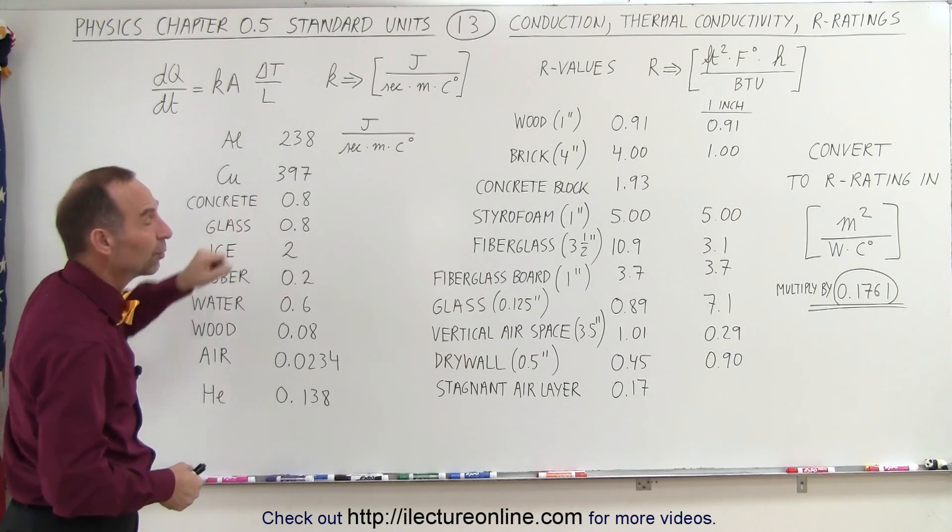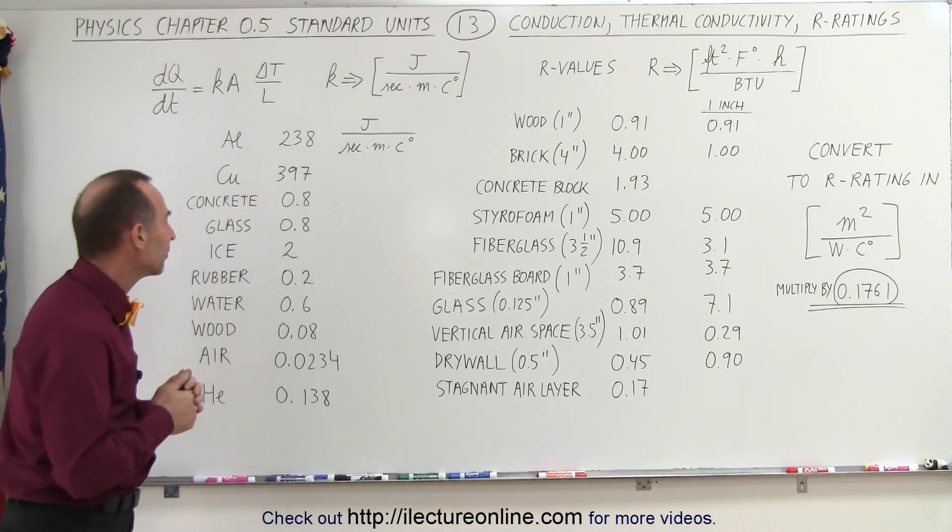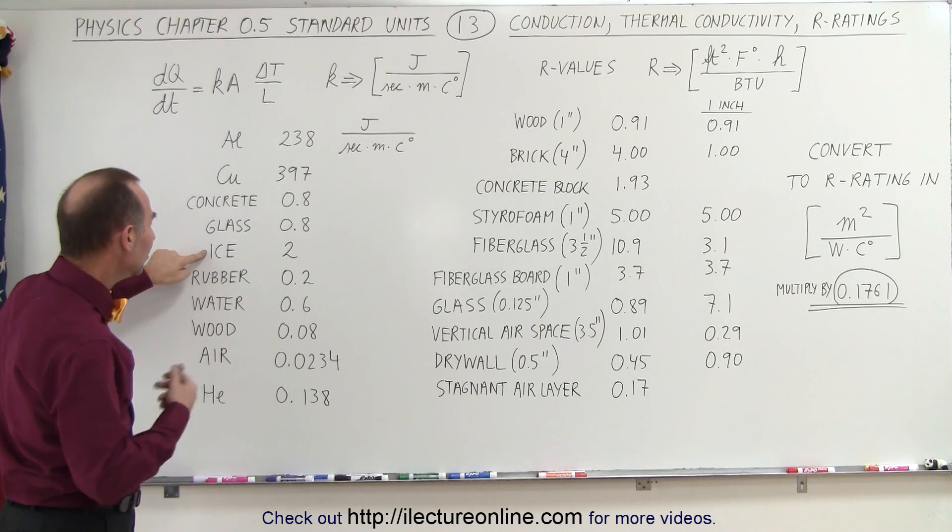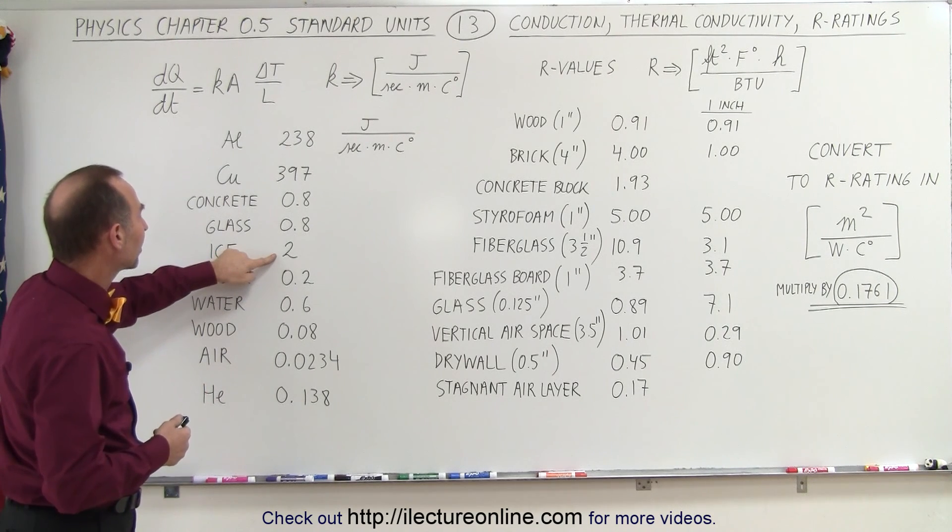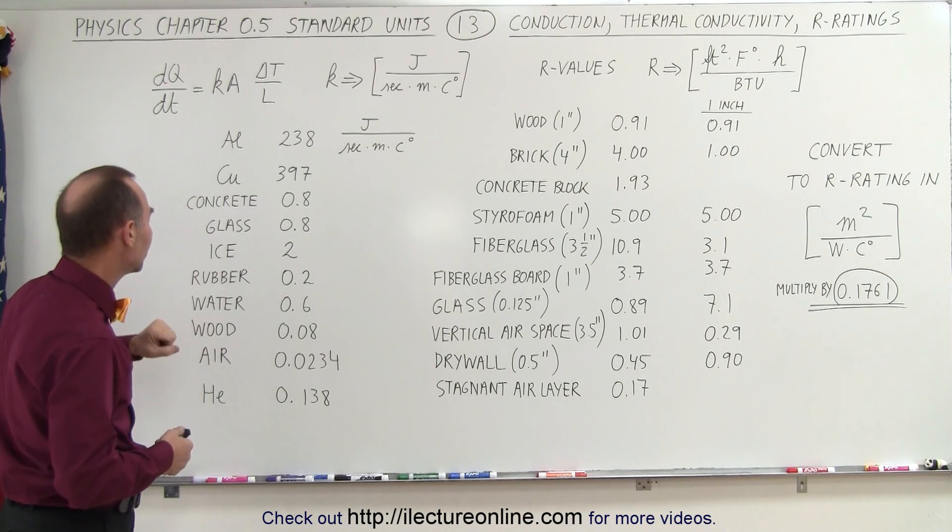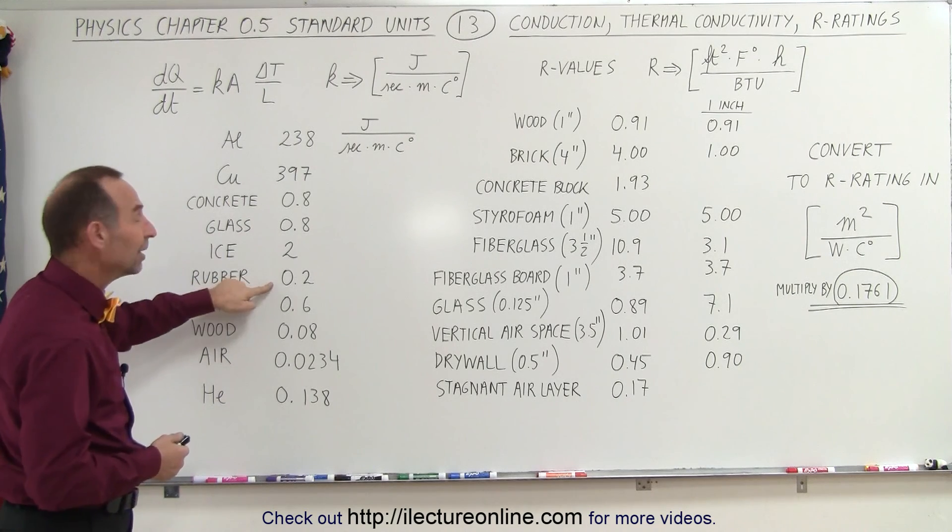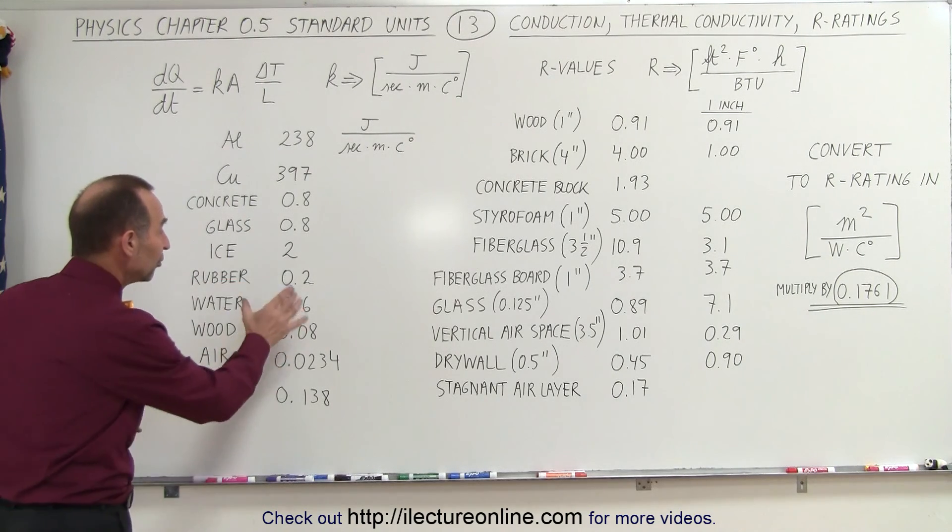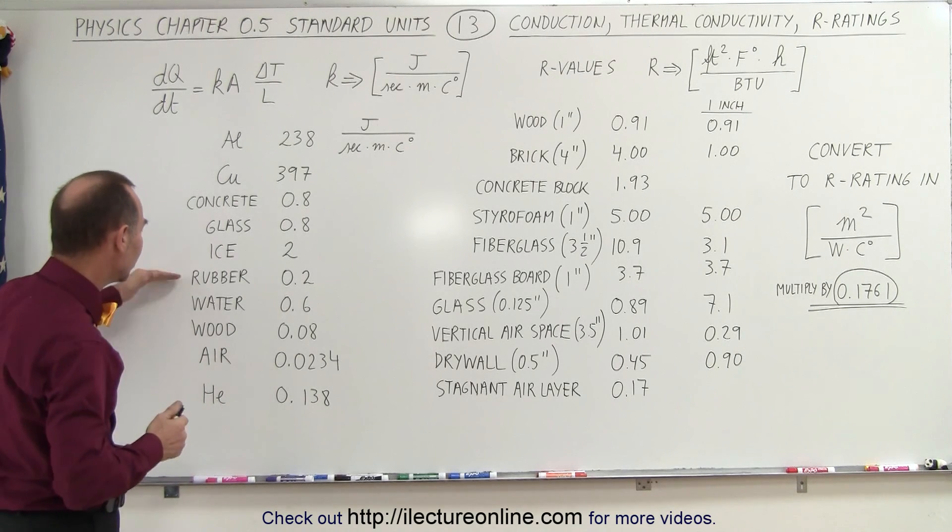Concrete and glass are much smaller. They're much more resistant to the conductivity of heat. Ice, interestingly enough, is a little bit better at conducting heat than concrete or glass. Rubber is a very good insulator. Once we start getting really small numbers, we think of these as being thermal insulators.